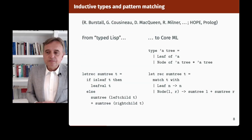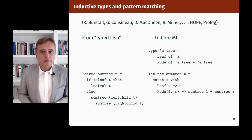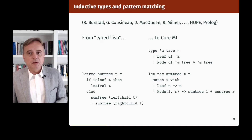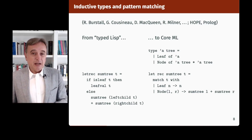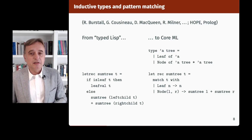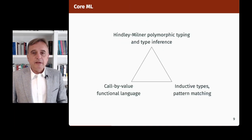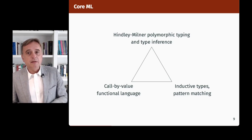It's only in the very early 80s that inductive types and pattern matching were added to LCF ML. Various work by Burstall, McQueen, Milner in Edinburgh, and Guy Cousineau in Paris, with some inspiration from Hope — an experimental language of Burstall — and perhaps also from Prolog. They went from the older style, seen on the left, to CoreML with a data type definition and a function defined by pattern matching over the tree. This gave CoreML as we know it today: a call-by-value functional language with inductive types, pattern matching, and Hindley-Milner polymorphic type inference.